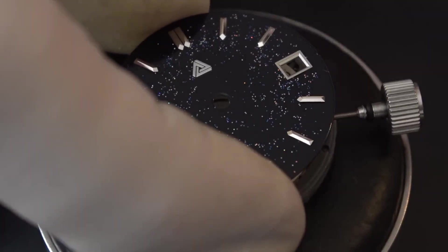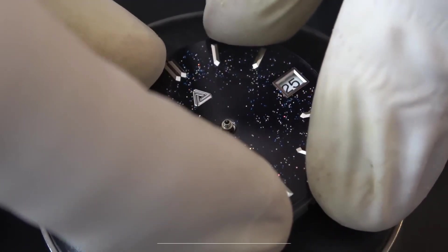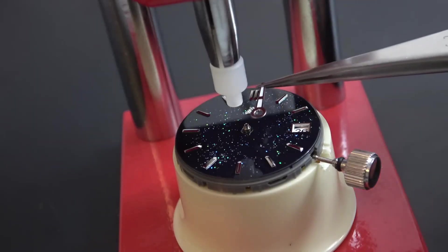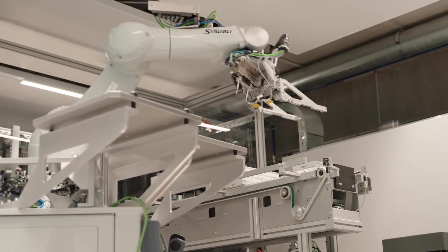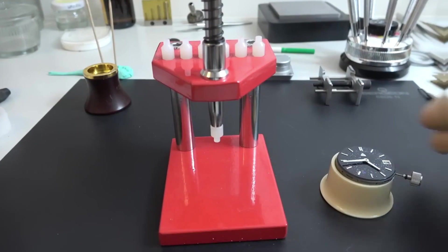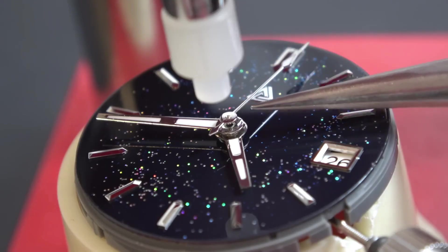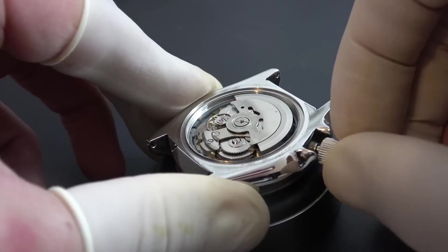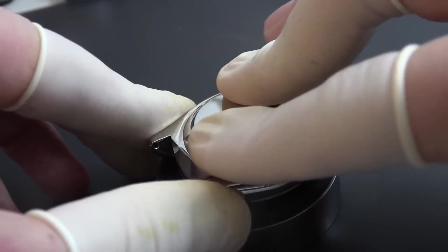But even the most perfect parts rely on human hands to unite them. Inside Omega's workshops, silence is sacred. White-gloved watchmakers sit beneath magnification lamps, movements and cases laid out before them like surgical instruments. Here, robotics can only go so far. The final act belongs to human precision. With tweezers, a watchmaker lowers the completed movement into its waiting case. It's a moment of tension, months of work now balanced on a few millimeters of alignment. One slip, one particle of dust, and the watch could be compromised beyond repair.